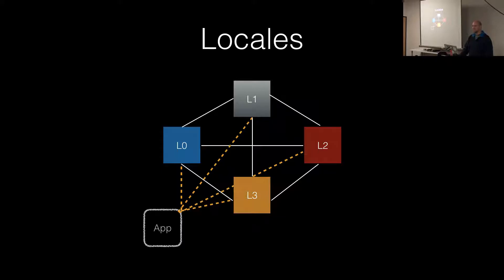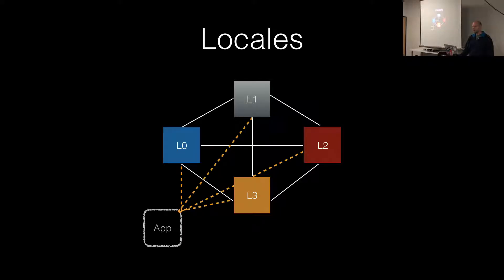One of the basic concepts in Parallax.js is the concept of a locale. A locale is typically a compute resource that has both compute and memory — typically you can think of these as servers. What Parallax does is create a fully connected graph of all the nodes in the cluster using WebSockets. Your application connects to one of these nodes and broadcasts its program to one or more of them, and then the program spreads itself across the cluster as needed.